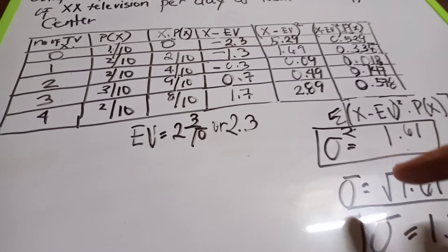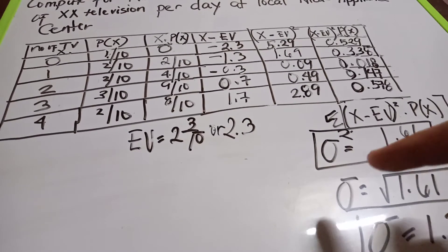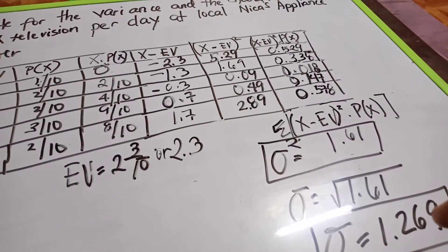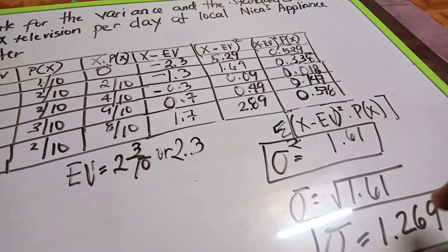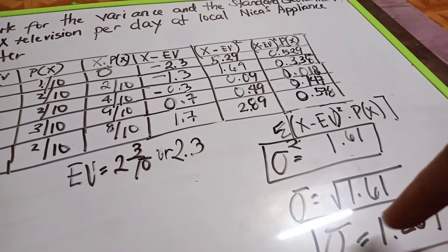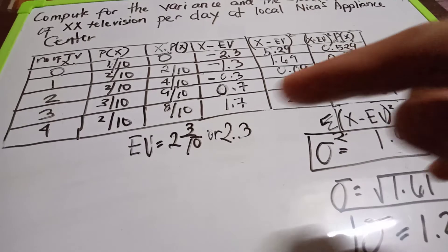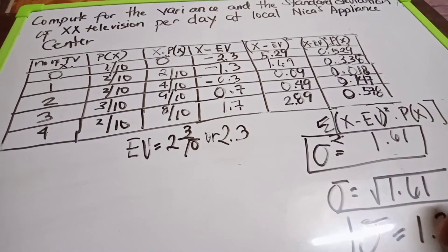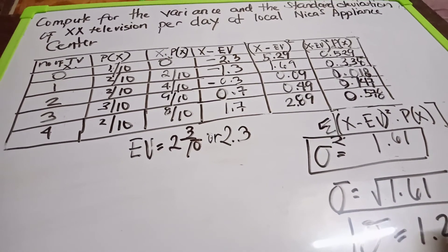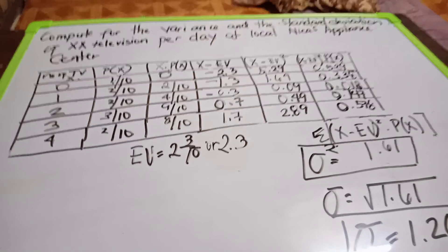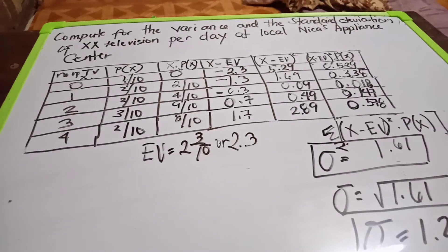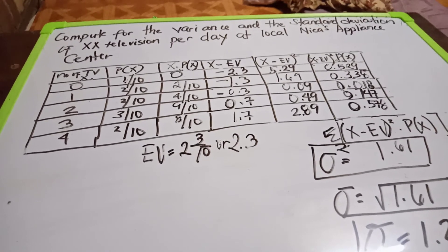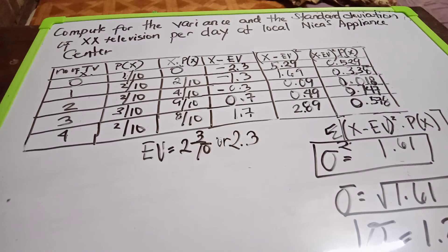To get the standard deviation, we take the square root of 1.61, which is 1.269. We have now computed the mean, variance, and standard deviation. Thank you, and we will proceed to using the normal distribution and its characteristics.